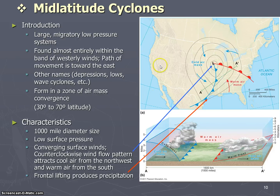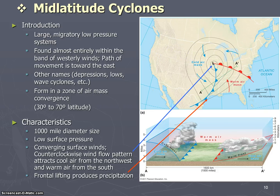It's found almost entirely within the band of westerly winds. If you recall the global wind belts, 30 to 60 degrees north and south is the zone of the westerlies, where winds are coming out of the west, moving toward the east, and those winds will push along the mid-latitude cyclone. So when you think of California getting a storm, you know it's going to move in this direction, and then maybe in a couple days Texas will have that storm as it continues its movement.